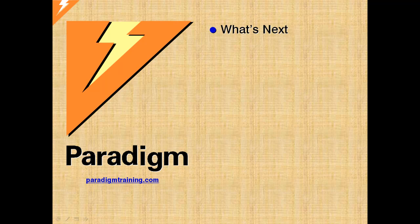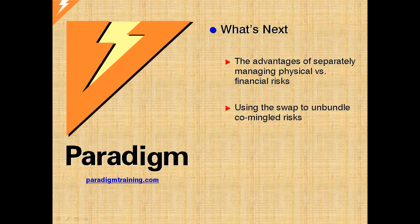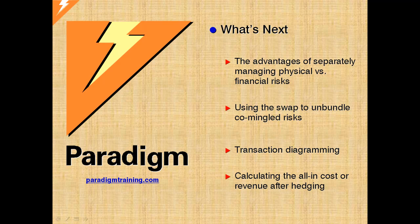In the upcoming modules, we will address the question: why use two transactions — a swap as well as an index supply contract — to create fixed price supply when that can be achieved with a single supply contract? One critical aspect of this discussion will be the advantage swaps provide in separating the management of physical versus financial risks. We will also explore how swaps can be used to reverse engineer bundled risks, and show how box-and-arrow diagrams are created and used in deal and hedge structuring to calculate the final cost or revenue from simple to complex derivative hedge structures.